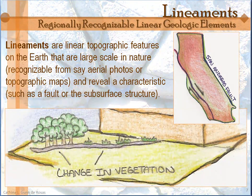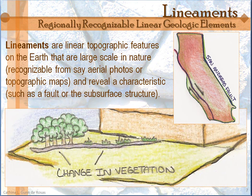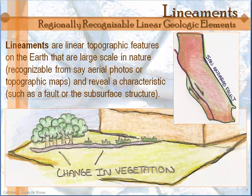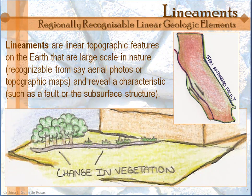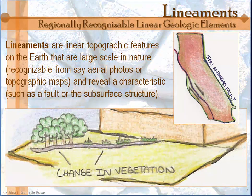Lineaments can also be indicated by changes in vegetation, because those often have a lot to do with the composition of the rock lending to the soil underneath. Many things can indicate these large-scale geologic changes, and lineaments can give you clues as to what's going on that you didn't have before. They're great tools, but they always have to be checked with the facts that you know — because they can be misleading, but they can also be very illuminating. That's the final thing I'm going to talk about in this section, so we will talk again next time.